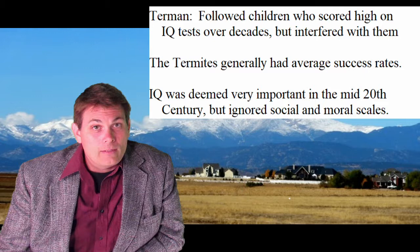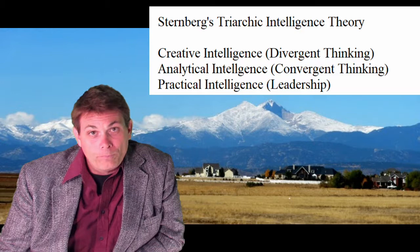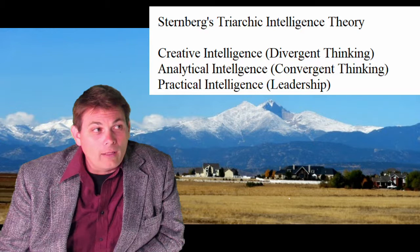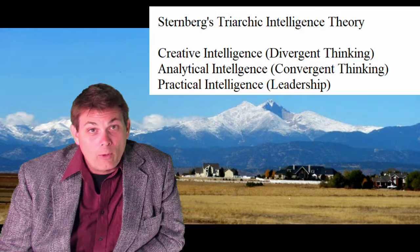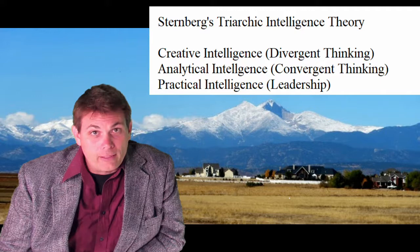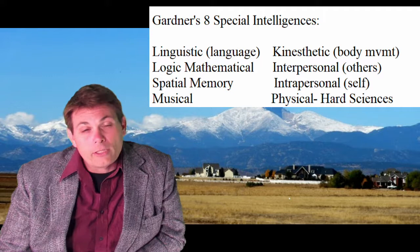What researchers did was divide things into different categories where people could score high IQ. Sternberg was the first to do this — he liked threes, so he decided there would be three versions of IQ. Creative intelligence is how well someone thinks creatively, using things in new ways, or divergent problem solving where you can have many different answers. Analytical intelligence is convergent intelligence — for example, mathematics where you get one answer. And then practical intelligence, which is essentially leadership quality. But research didn't really pan it out.